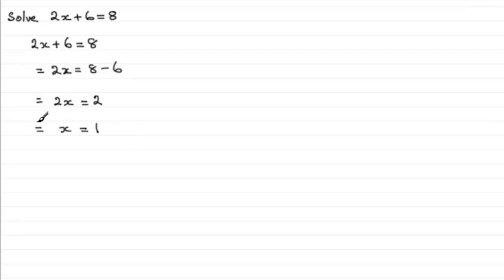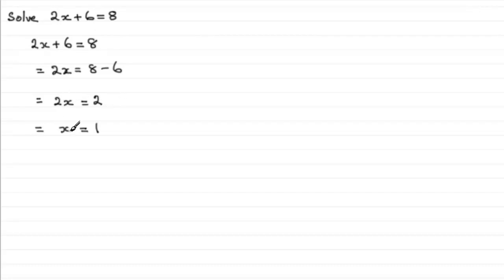Well, it's these equals signs. They don't make any sense at all. For instance, we've got here 8 equals 2x, and on this line I'm saying 2x equals 2 — so I've already contradicted myself. 8 equals 2x, 2x equals 2 — 8 can't be equal to 2. And here I say 2 equals x, but then I say x equals 1. So again there's a contradiction. Writing out equations like this, putting equals signs in a chain, is not a good idea.